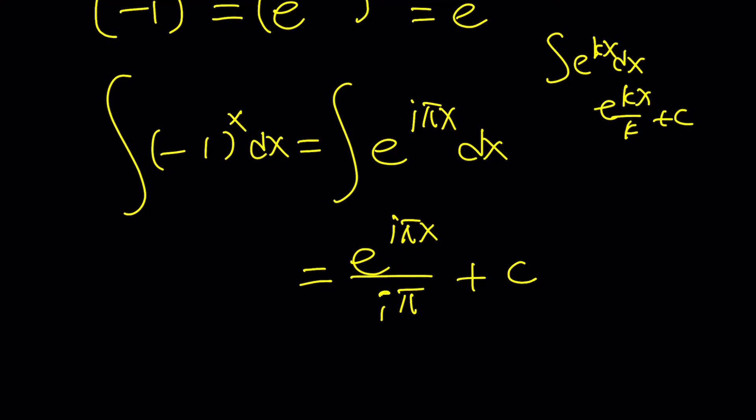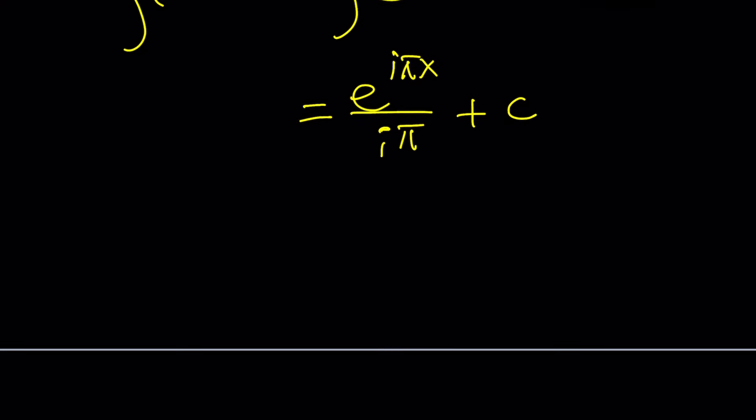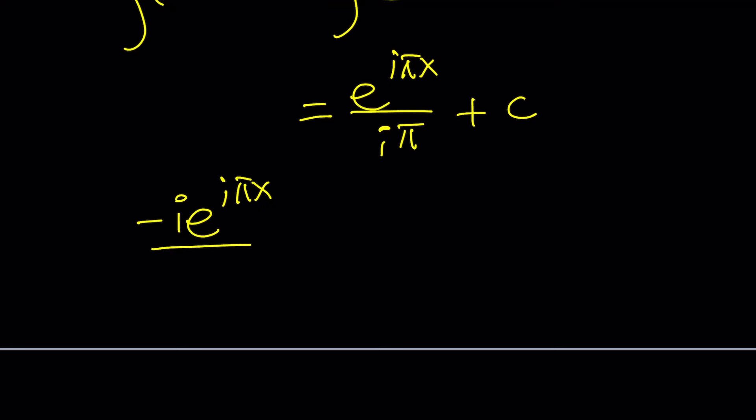But, of course, you don't want the i at the bottom, do you? So, you would probably just multiply by negative i. Negative i would be better. So, you would get negative i e to the power of i pi x divided by negative i squared, which is 1, over pi plus c. Great. You can also make this a little neater. I mean, not necessarily, but remember where e to the i pi x comes from. This is actually negative 1 to the power of x. So, you can kind of write this as negative i times negative 1 to the x divided by pi plus c.